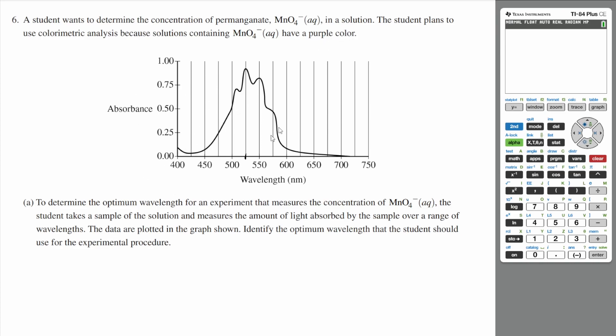The student plans to use colorimetric analysis because solutions containing permanganate have a purple color. So we have an absorbance graph here. Part A says to determine the optimum wavelength for an experiment that measures the concentration of permanganate.